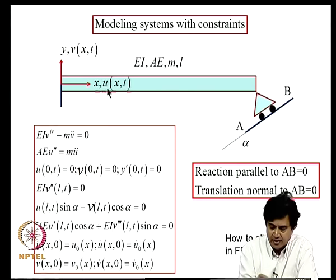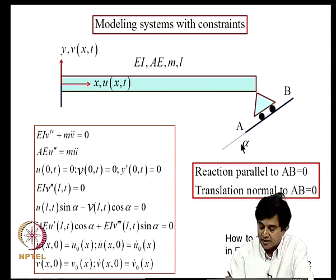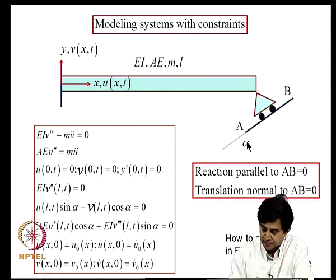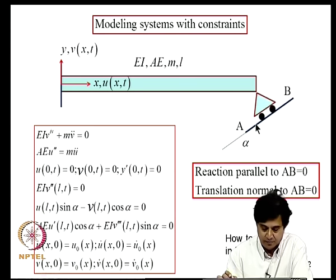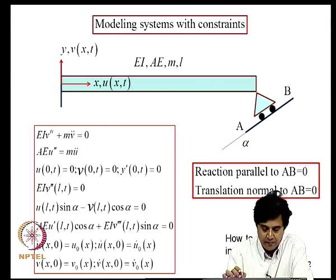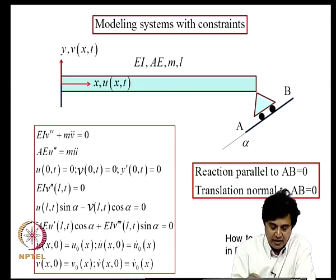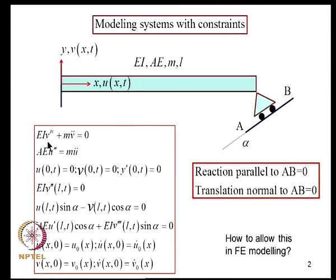If we consider a cantilever beam which is now supported on a roller inclined to the horizontal through an angle alpha, how do we formulate this problem? Within the framework of axial vibration of bars and Euler-Bernoulli beam theory, using the PDE approach we can write the equilibrium equation for the dependent variable V, the transverse displacement, using Euler-Bernoulli beam theory, and similarly for axial vibration we write the second order equation for axial displacement U.